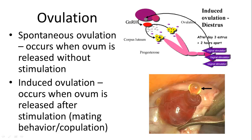Ovulation can be either spontaneous or induced. In spontaneous ovulation, the ovum is released without stimulation — this happens in humans. Induced ovulation occurs when some sort of stimulation, either mating behavior or coitus itself, causes ovulation to occur, and the ovum is retained until after that stimulation.